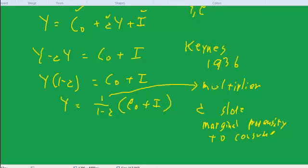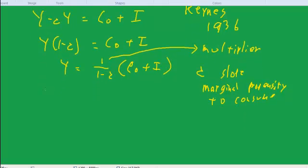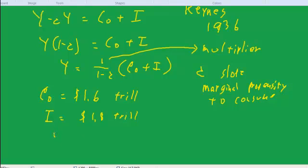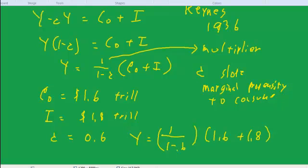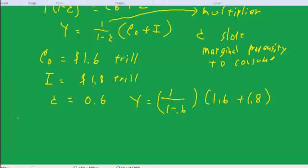Okay, so we have this equation, and that will tell us output. Now let's just throw in some examples. Suppose that the intercept was 1.6 trillion. And suppose that investment was 1.8 trillion. And suppose that the marginal propensity to consume was 0.6. Then our equation would be Y equals 1 over 1 minus 0.6 times 1.6 plus 1.8.